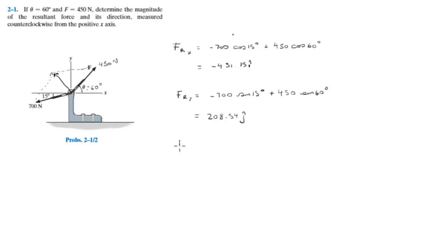So the resultant force is equal to negative 451.15 in the i direction plus 208.54 in the j direction.